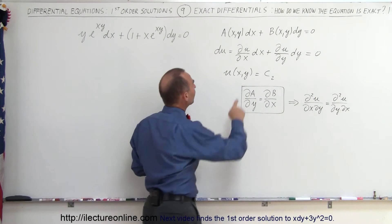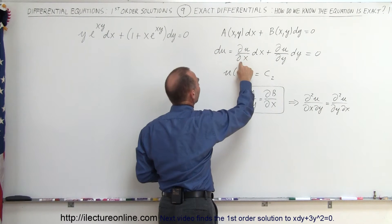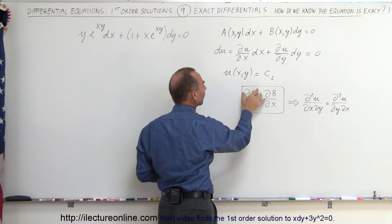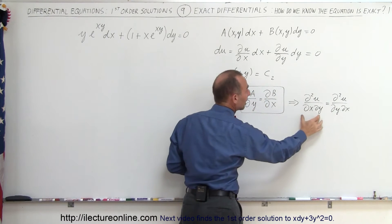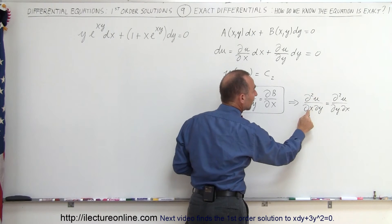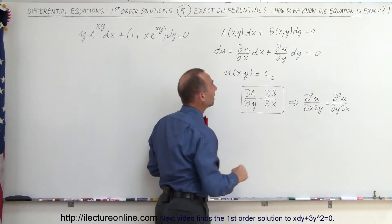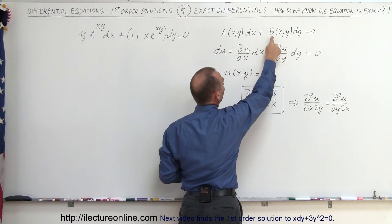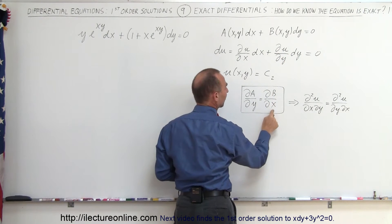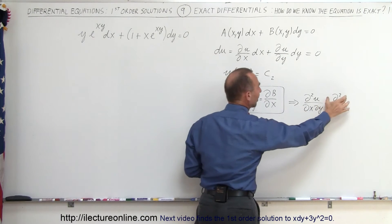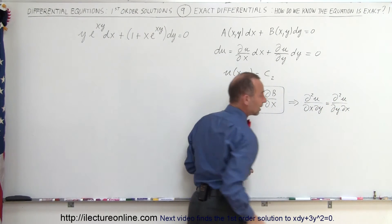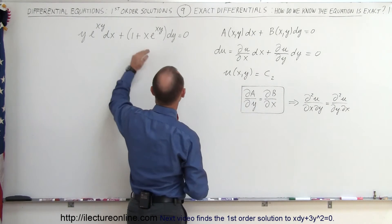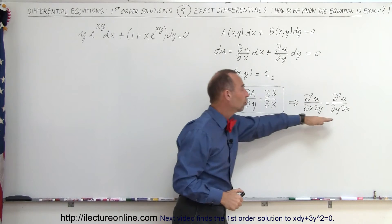Notice that since a is the partial of u with respect to x, if we then take the partial of this with respect to y, we get the partial of a with respect to y, which is really the second derivative of u with respect to x and y. And if we take the partial derivative of b with respect to x, we also get the second derivative of u with respect to x and y. And of course they therefore must be equal.